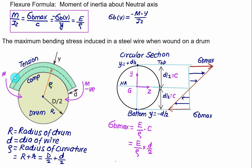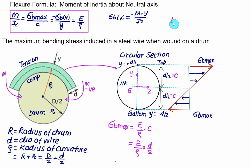The top fiber is in tension — show the arrow rightward — and the bottom fiber of the circular wire is in compression — show it leftward. You can calculate stresses in beams using the flexure formula, as well as stresses in a thin wire or thin plate that are bent or wound on a drum. We can also calculate the maximum normal strain: Young's modulus equals maximum bending stress divided by strain, so dividing the bending stress by the Young's modulus gives the maximum normal strain.